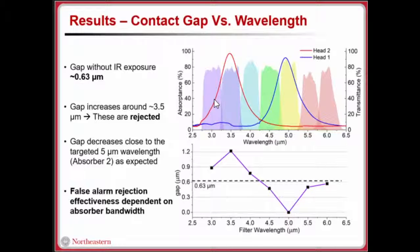As we expose it to the rejected wavelength, the gap increases to 1.2 micron. When we expose it to the targeted wavelength at 5 micron, we see that there is nearly zero and it turns on without any voltage. You can see that the contact gap increases for also 3 micron and 4 micron filter. That's mainly due to the fact that the absorber has a finitely large bandwidth. If we want to reject just 3.5 micron, we need to incorporate much narrower band absorbers.